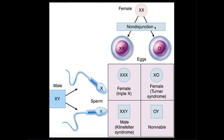But what happens if we have a non-disjunction event? We can get two cases — and we're going to assume that the polar bodies are not shown here; these are just two different cases of the viable cell, which are secondary oocytes. That's the exact cell that gets fertilized by the sperm cell. In one case, we have a secondary oocyte that has two X chromosomes — meaning both X chromosomes ended up in the secondary oocyte. In another case, the secondary oocyte didn't get any X chromosomes, implying the polar body got both. This zero, or O, implies there's no X chromosome present.